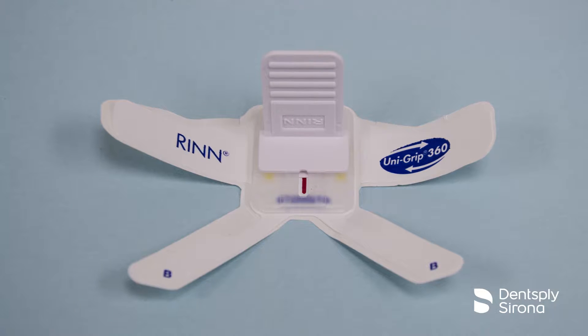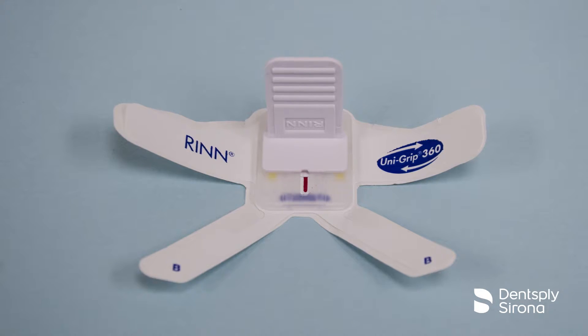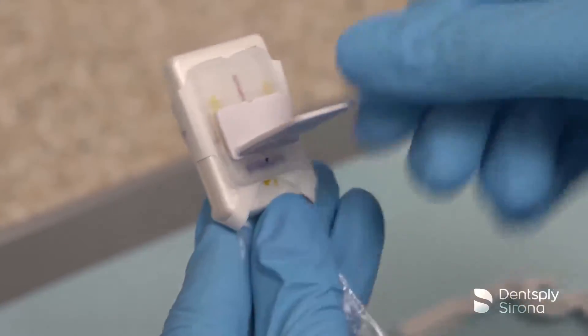The Unigrip Universal Sensor Holder is designed to provide an entire full mouth series using only one holder. This video will demonstrate the time-saving feature of the Unigrip 360 holder and its easy rotating tab.